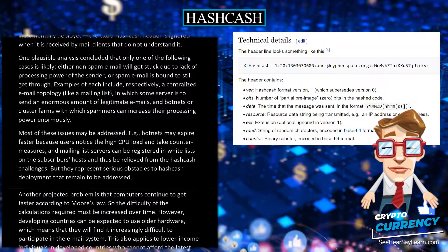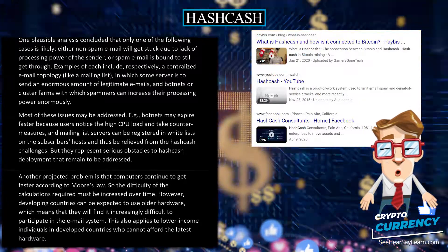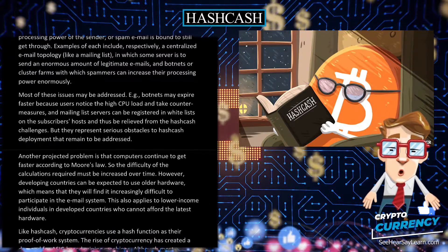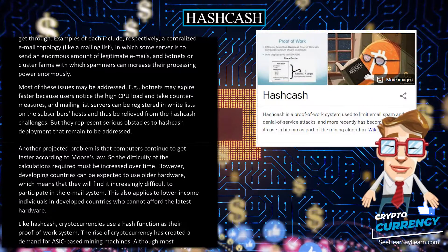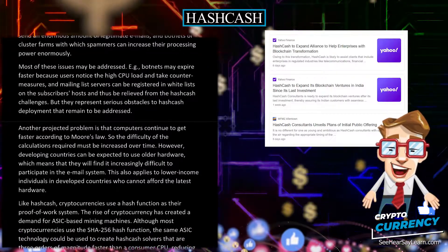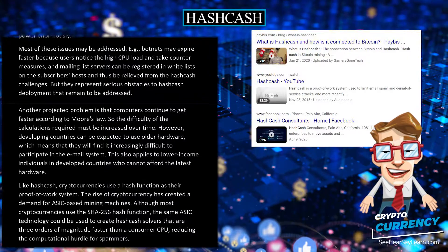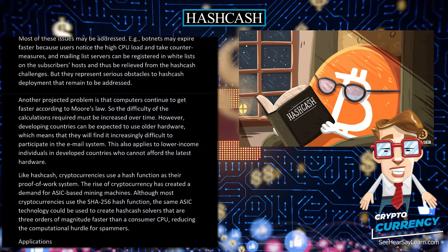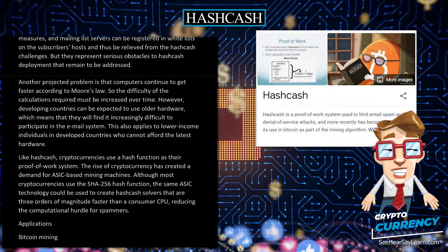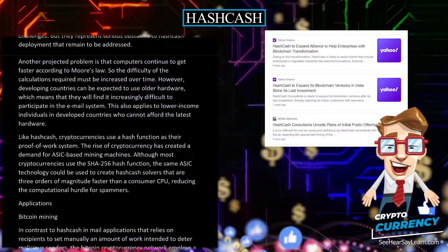Another projected problem is that computers continue to get faster according to Moore's law, so the difficulty of the calculations required must be increased over time. However, developing countries can be expected to use older hardware, which means that they will find it increasingly difficult to participate in the email system. This also applies to lower income individuals in developed countries who cannot afford the latest hardware. Like hashcash, cryptocurrencies use a hash function as their proof-of-work system. The rise of cryptocurrency has created a demand for ASIC-based mining machines. Although most cryptocurrencies use the SHA256 hash function, the same ASIC technology could be used to create hashcash solvers that are three orders of magnitude faster than a consumer CPU, reducing the computational hurdle for spammers.